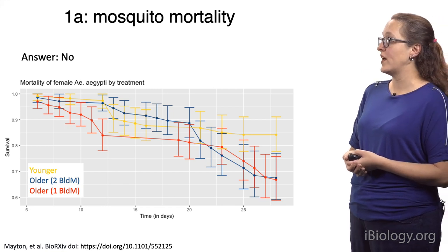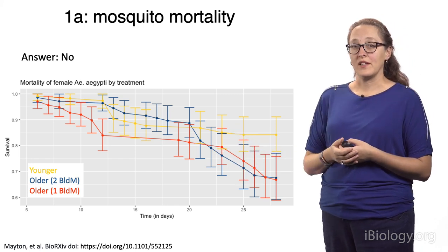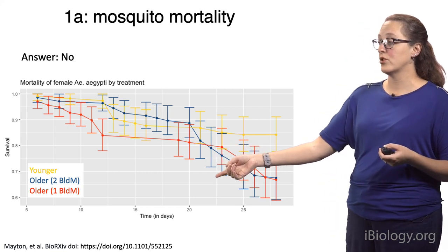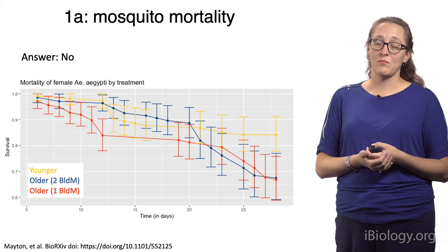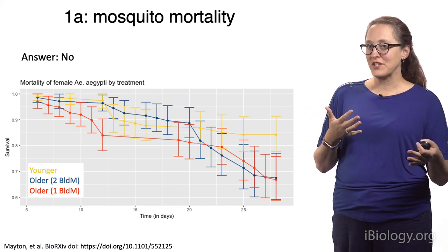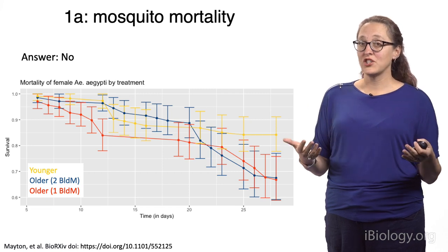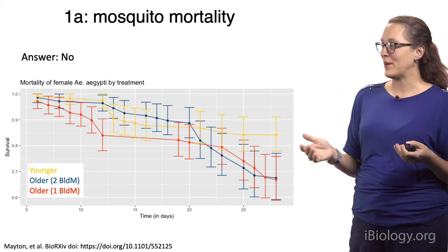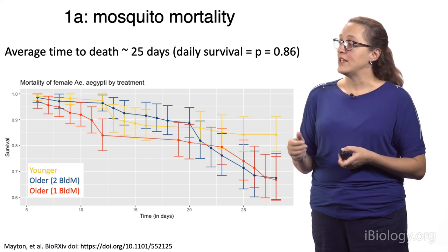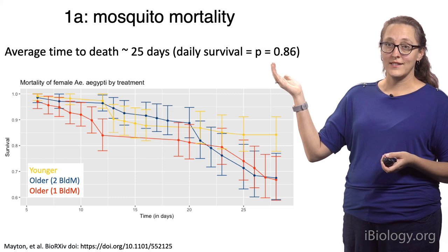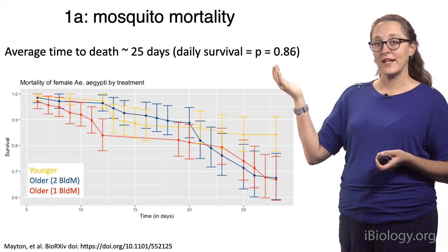The first question was: does age affect mortality? These are the three treatments and their mortality curves. The answer is not really. We saw some significant difference between the older one-blood-meal group and the older two-blood-meal group, but this was a difference of less than half a day. When we talk about statistical significance, we also have to talk about biological significance — that half a day really wasn't biologically relevant enough to change the way we were thinking about mortality. What we determined was that the average time to death was about 25 days, which translates to an average daily survival rate of 0.86 — this is how we represent P in our vectorial capacity equation.